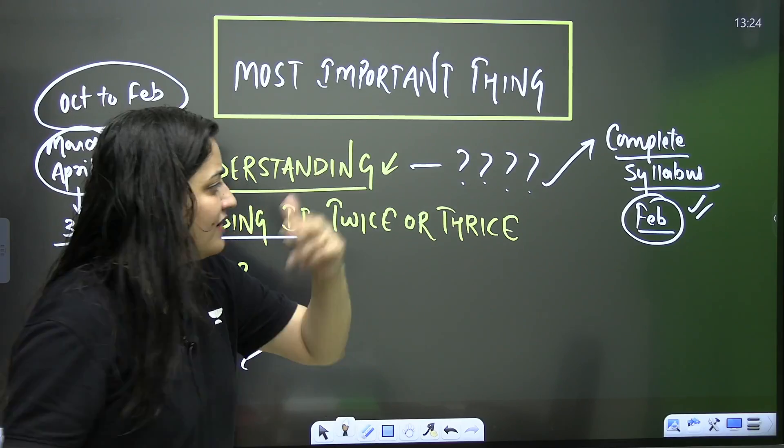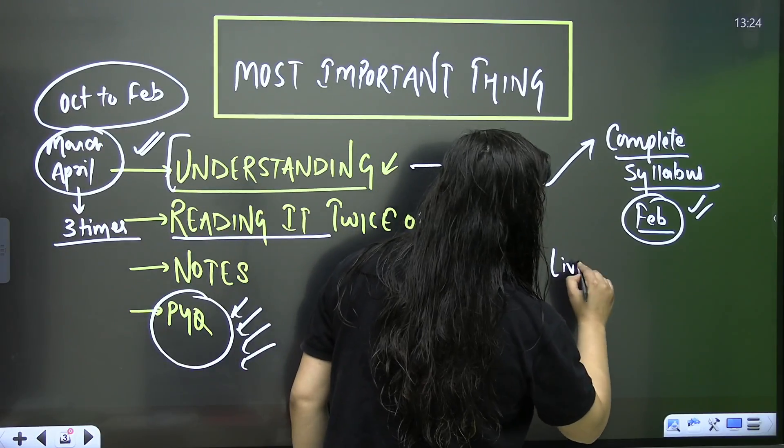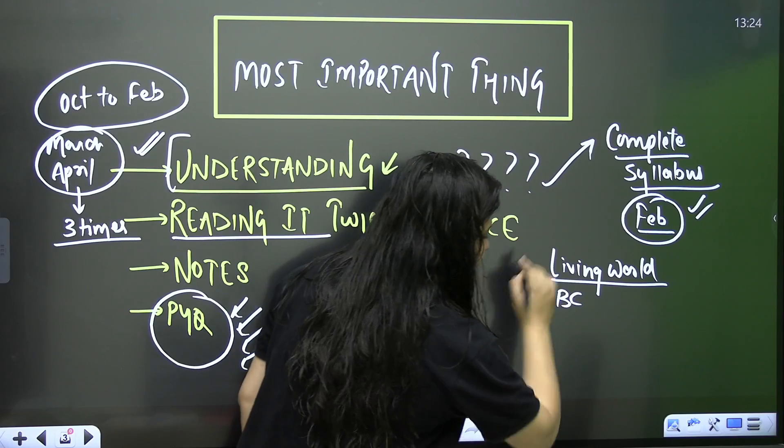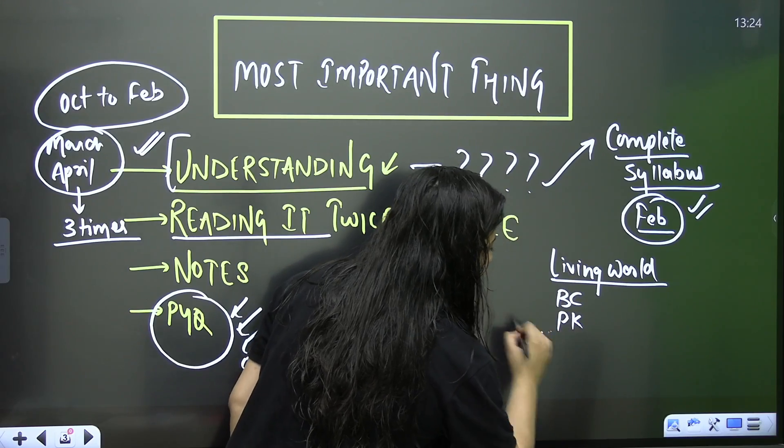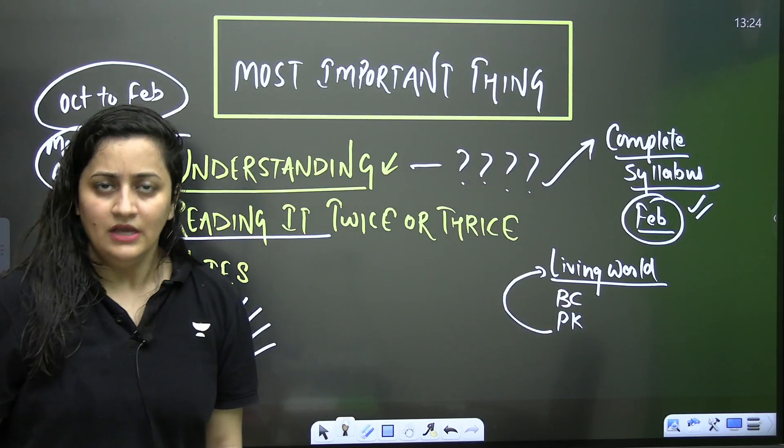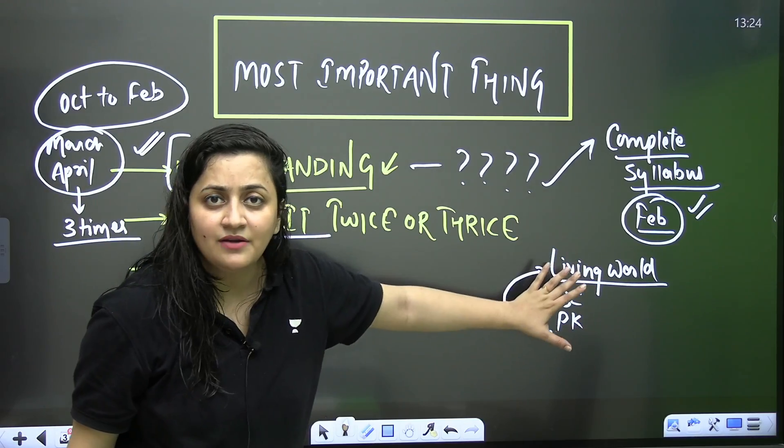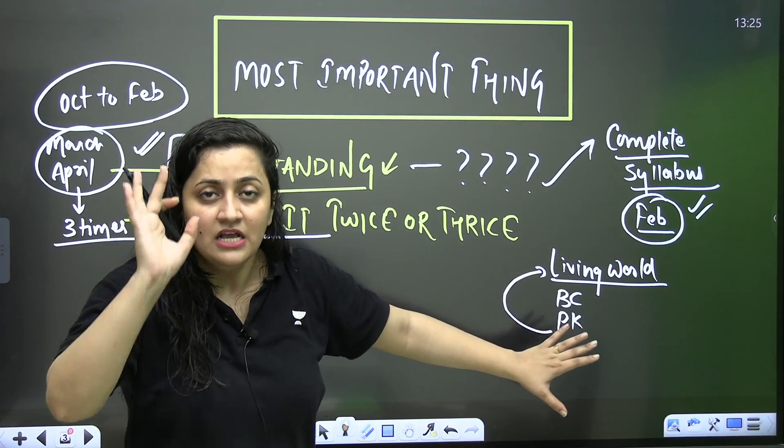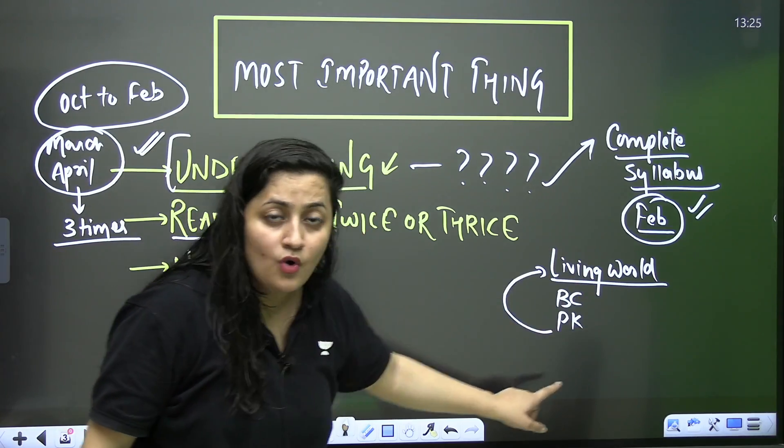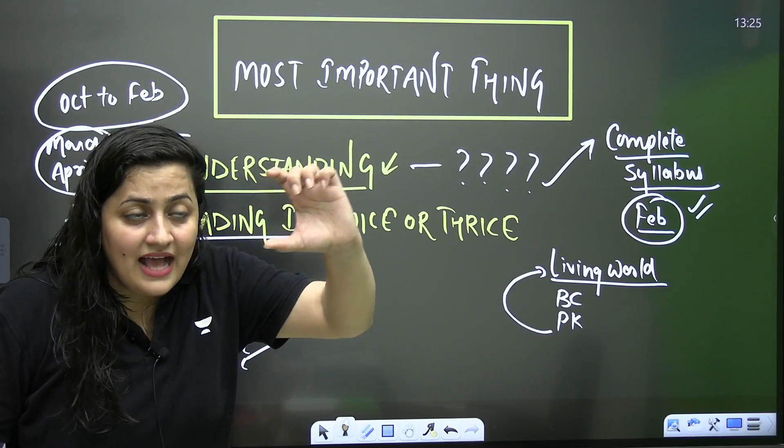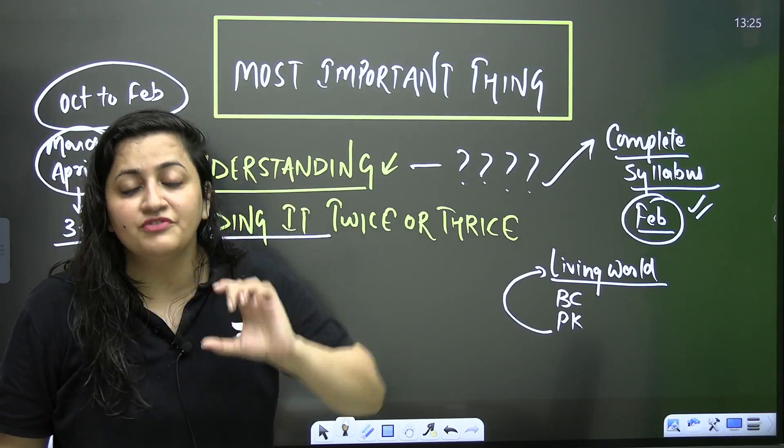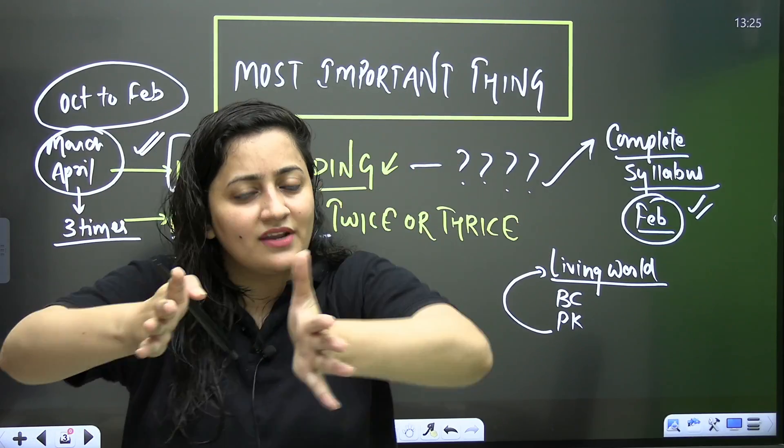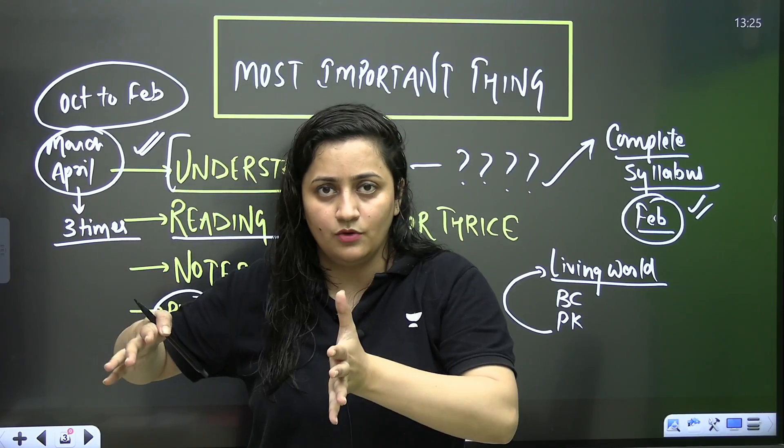Now, let's say you have started your revision from the living world, from class 11th, first chapter. So, after finishing biological classification and plant kingdom, go back to the living world. And I know you do not have that much time because you have to give time for physics as well, for the chemistry as well. So, what you should do, whatever notes you have formed, you can actually divide your syllabus in the set of three.